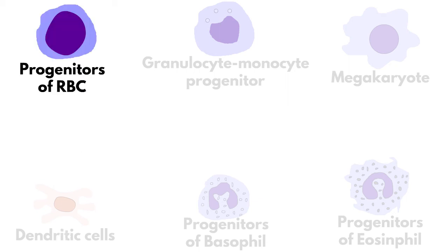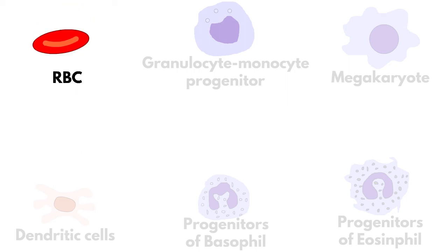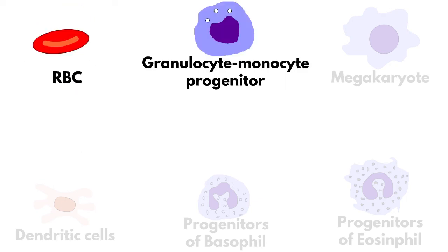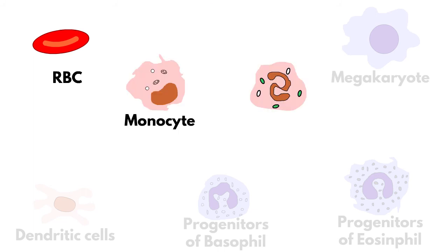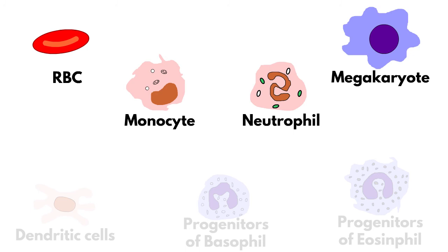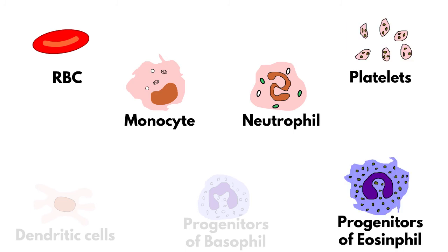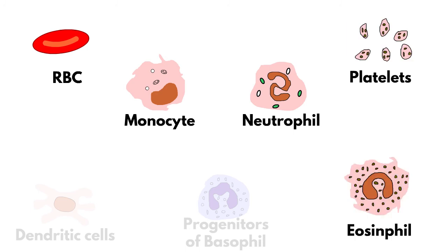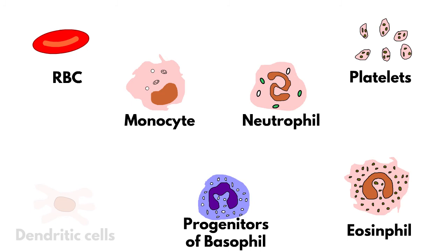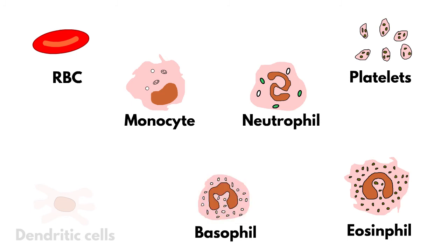Progenitors of RBC differentiate into RBC; granulocyte-monocyte progenitors give rise to monocytes and neutrophils; megakaryocyte differentiates into platelets; eosinophil progenitor differentiates into eosinophils; and basophil progenitor differentiates into basophils.